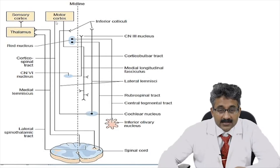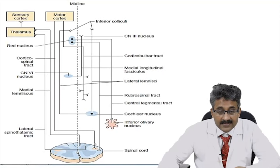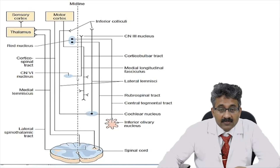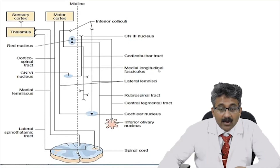The descending tract from the motor cortex — from area 4, the Betz cells — is the corticospinal tract, which comes down and crosses in the lower part of the medulla, synapses in the anterior horn cell, and supplies the muscles. From the motor cortex, there are also other fibers — the corticobulbar tract — which decussate and innervate the opposite cranial nuclei. All cranial nuclei have connections from the opposite side of the motor cortex. The medial longitudinal fasciculus connects the third cranial nerve nucleus on one side with the sixth cranial nerve nucleus on the opposite side.